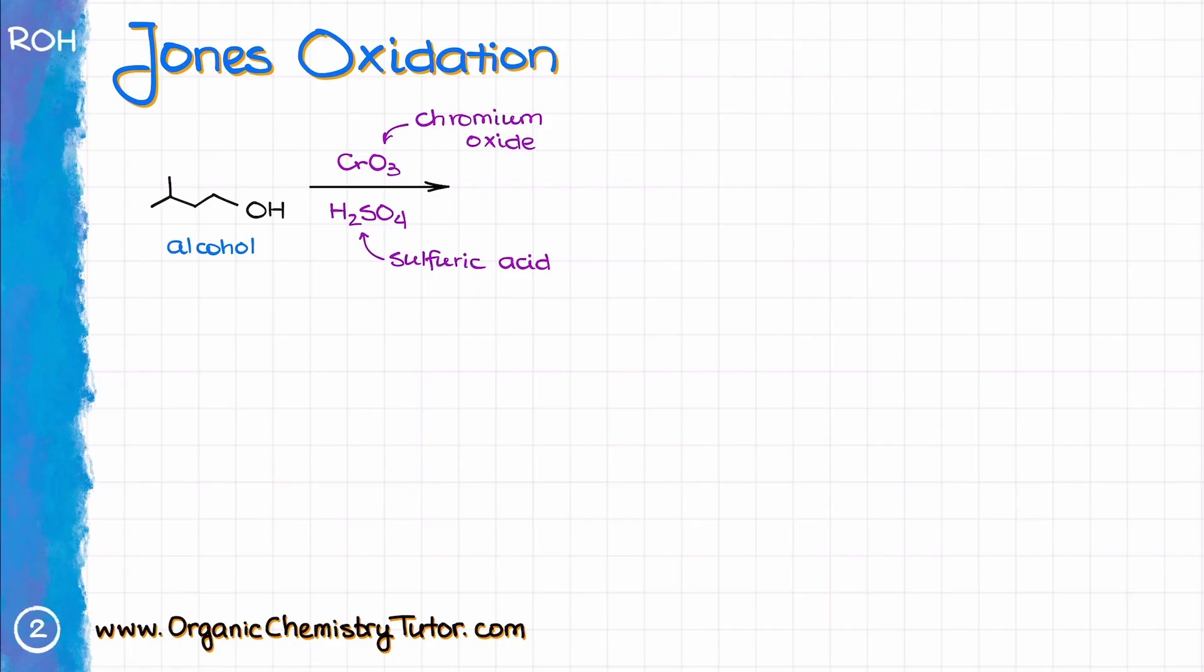For instance, some people like to perform this reaction with chromic acid or potassium bichromate in sulfuric acid. You can use whichever reagent you like most because they all perform exactly the same function. So for the rest of this tutorial, I'll be using the classic version with chromium oxide and sulfuric acid, but remember that these reagents are interchangeable.